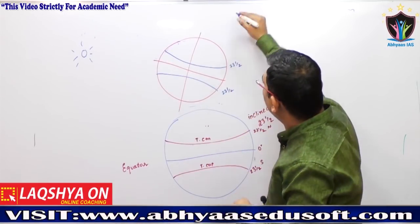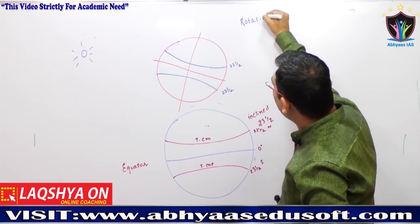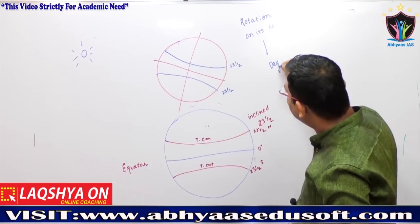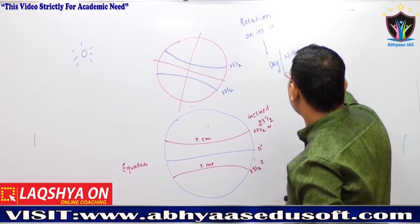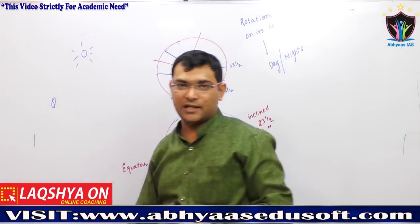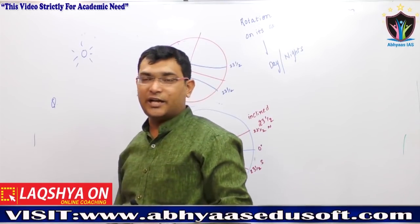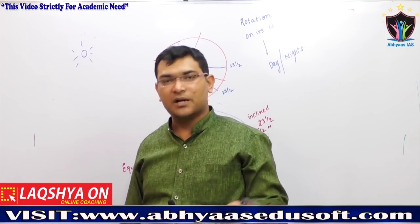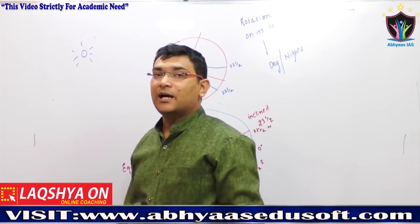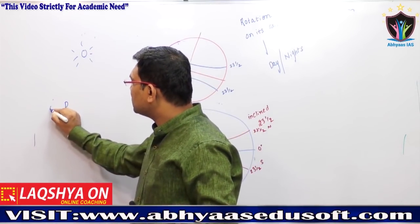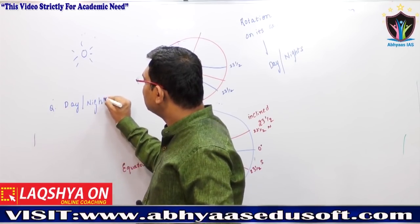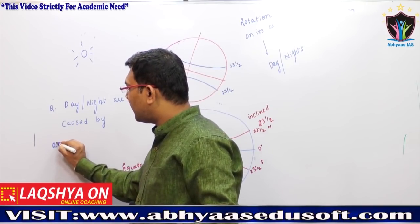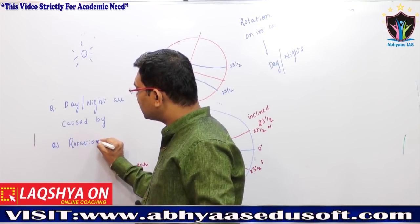When rotation is taking place — rotation on its own axis — the resultant will be days and nights. A question might be asked: if the earth is rotating on its own axis, what will be the resultant? Another question: days and nights are caused by — option A: rotation on its axis.